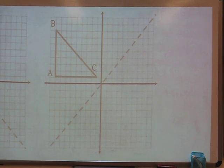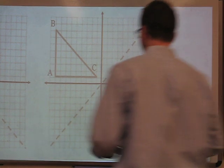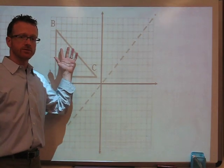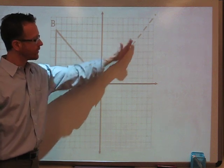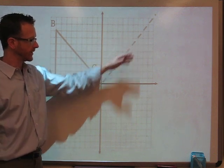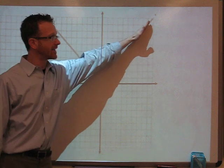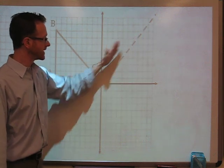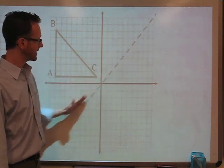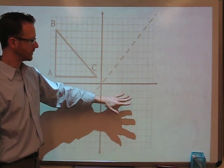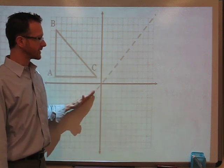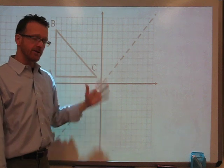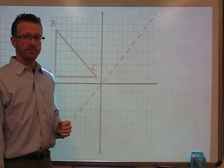In this video, we're going to look at transformational geometry, specifically a reflection over a diagonal. In this situation, we're asked to reflect the triangle ABC over this diagonal line of reflection here. This is a positive sloped line of reflection — essentially it's y equals x. So we'll see if we notice anything that happens when we are reflecting over a positive line of reflection.